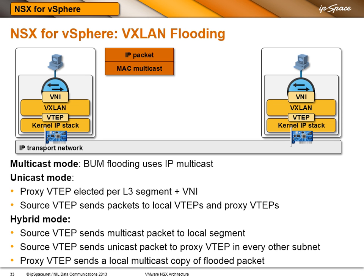In hybrid mode, you use multicast locally within a subnet, but instead of relying on the data center transport infrastructure to provide IP multicast remotely across different subnets, you send a unicast packet to the proxy VTAP in every other subnet, and those proxy VTAPs send local multicasts. So you use multicast for flooding within every layer 2 segment and unicast to get packets across segments where the layer 3 infrastructure does not support multicast.